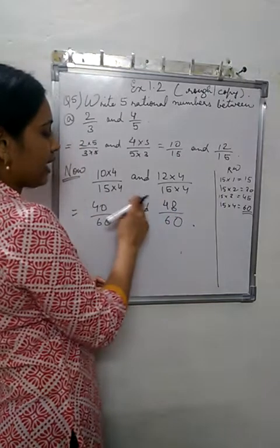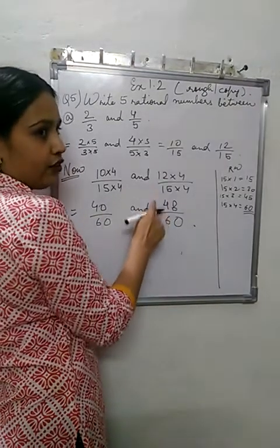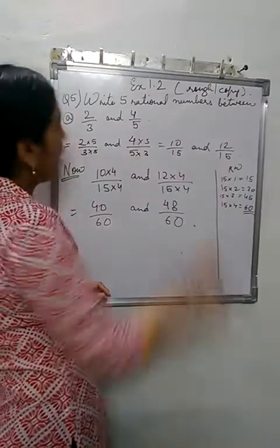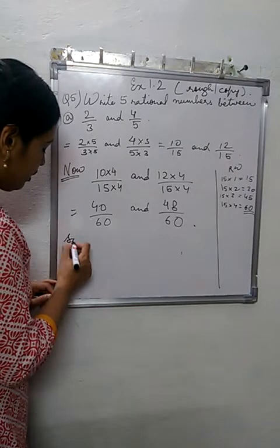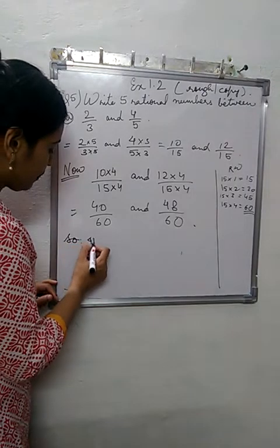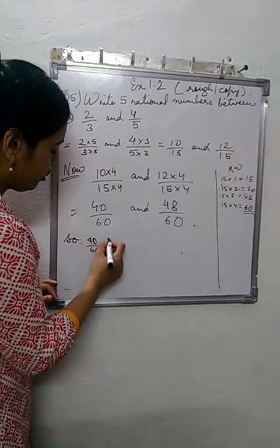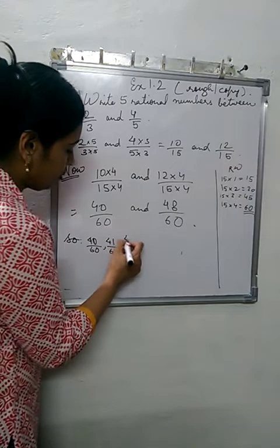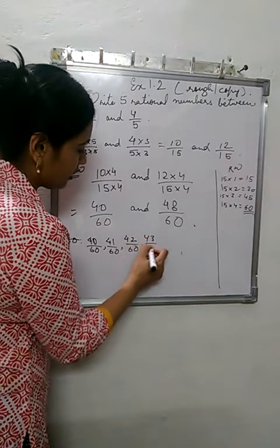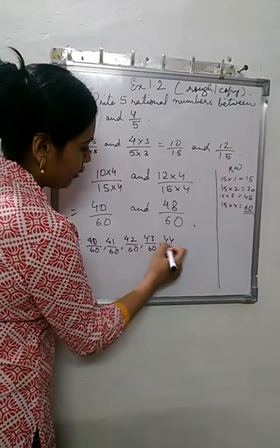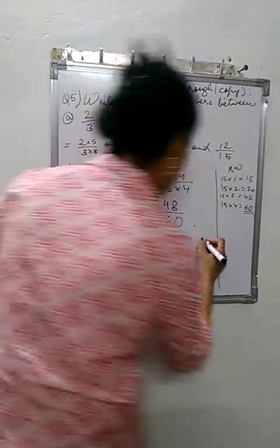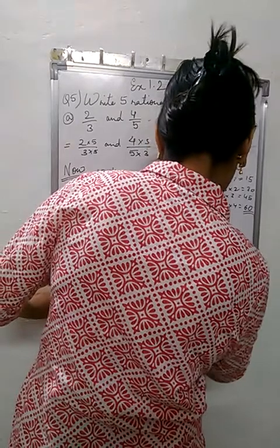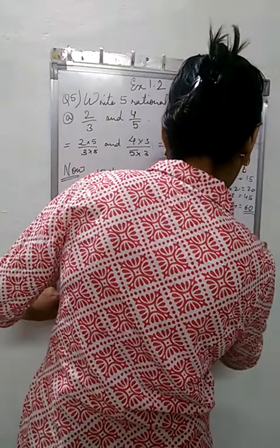How many numbers in between? Exactly: 41, 42, 43, 44, 45, 46, 47. Seven numbers, and we need only 5. So this way is correct. So now we find the numbers in between: 40 by 60, 41 by 60, 42 by 60, 43 by 60, 44 by 60, 45 by 60, 46 by 60, 47 by 60, and 48 by 60.